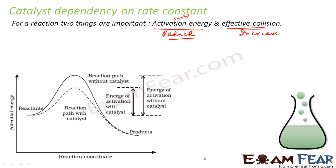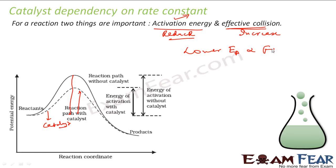With this alternate pathway, the energy of activation is less. If you see the diagram, without catalyst the normal line shows a higher activation energy. With catalyst, the dotted line shows a lower activation energy. The potential barrier is reduced — the dotted line with catalyst sits lower than the normal line without catalyst. Lower activation energy means a faster reaction.